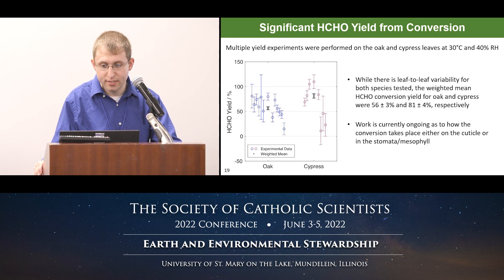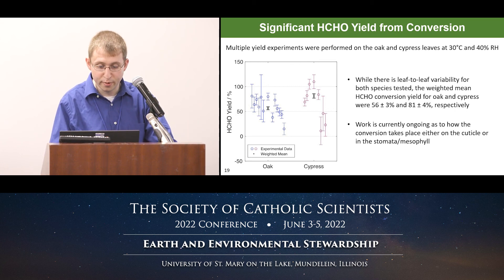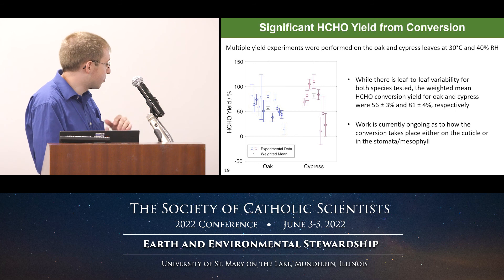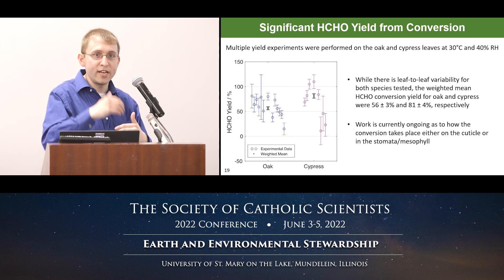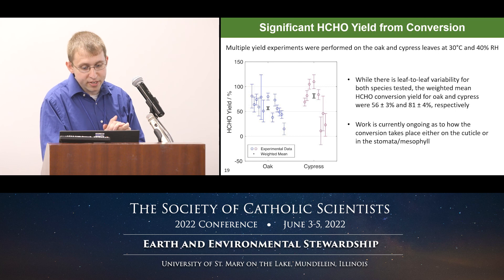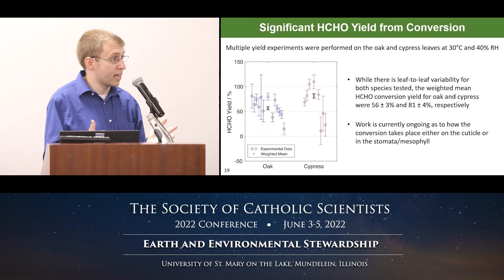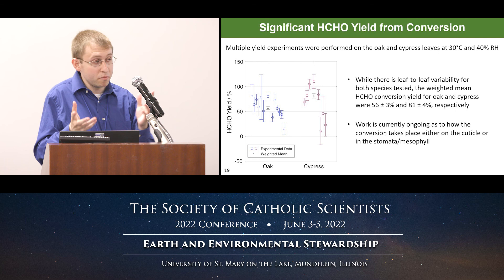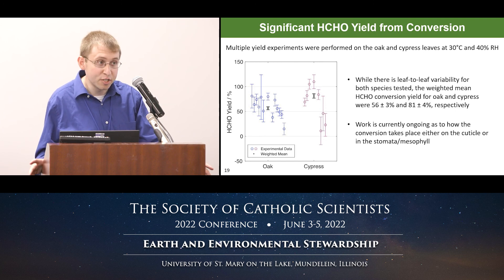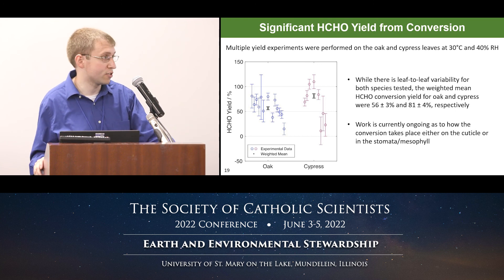We ran multiple yield experiments for oak and cypress leaves at 30°C and 40% relative humidity. There was quite significant leaf-to-leaf variability with large error bars, as expected from a biological system. However, the weighted means for both oak and cypress were above 50% yield, suggesting that the conversion of ISOP-OO on leaf surfaces could be a dominant source of formaldehyde into the forest canopy — located in the right part of the canopy, in a pristine forest where ISOP-OO is present.